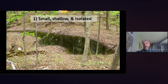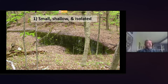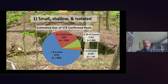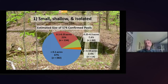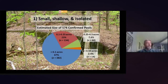One of the main characteristics of vernal pools is that they're small, shallow, and isolated from permanent wetlands. Looking at real data on 574 confirmed vernal pools in Vermont, the vast majority — two-thirds — were less than a tenth of an acre. About a quarter were between a tenth and a quarter of an acre, and only a small percentage were larger than half an acre.